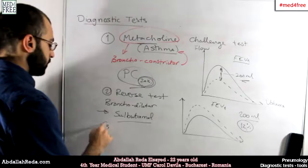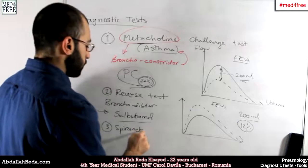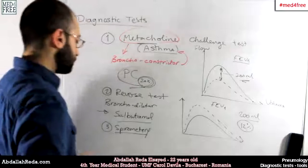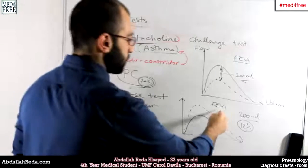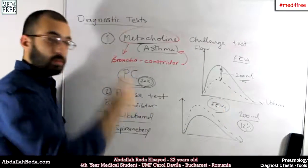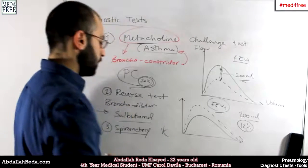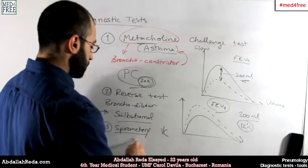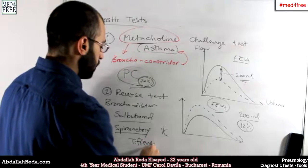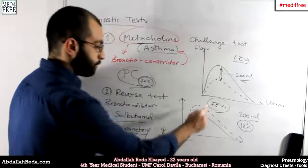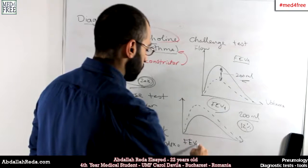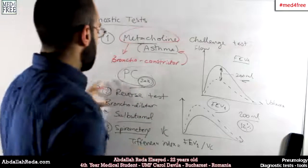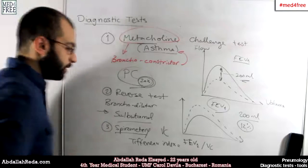Spirometry is also used — we talked about spirometry in a previous video. Spirometry measures the forced expiratory volume per second, the peak expiratory flow, the vital capacity of the lung, and so on. The most important thing measured with spirometry is the Tiffeneau index, which is the ratio between forced expiratory volume in 1 second and the vital capacity of the lung.